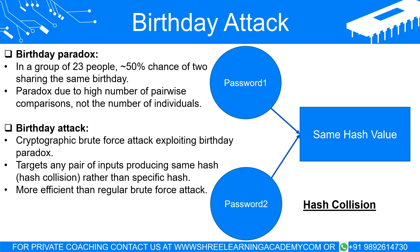To differentiate: a brute force attack involves trying all possible keys until the correct one is found — a process that can be resource-intensive and time-consuming. However, in a birthday attack, the attacker is not looking for one specific hash, but any pair of inputs that produce the same hash value, known as a hash collision. The mathematics show that finding such a pair is highly likely after approximately the square root of the total number of possible hashes in attempts — much more efficient than a simple brute force approach.